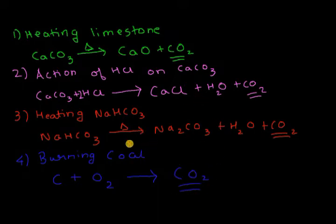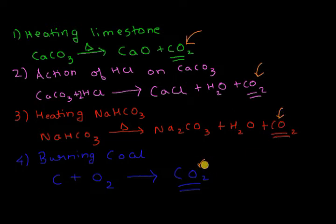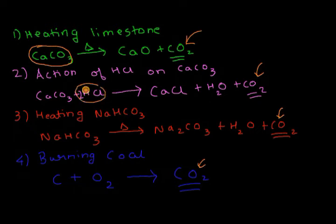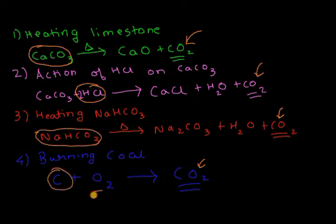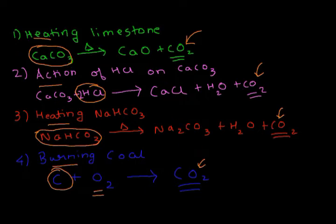So what this law exactly states is that the ratio of elements in carbon dioxide remains constant across all four methods. The sources are different — calcium carbonate, calcium carbonate with HCl, sodium bicarbonate, and carbon burned in oxygen — and the procedures are different, but carbon dioxide is the common product throughout.